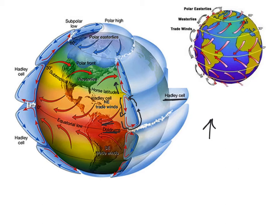The trade winds were named because we could send boats to the west using them. Now above the horse latitudes, air can warm up as it travels north and rise back up, creating another cell. As the wind blows north across the surface, it bends a little to the right due to the Coriolis effect, and that's how we end up with our westerly winds.